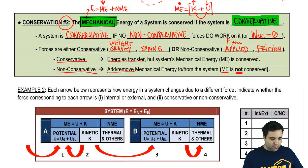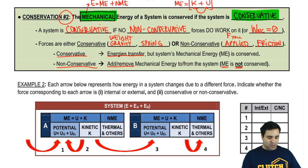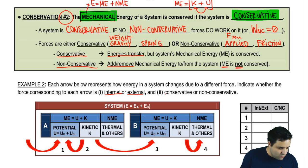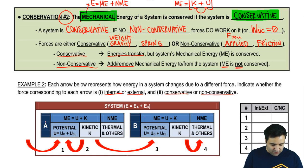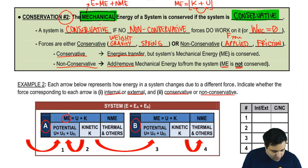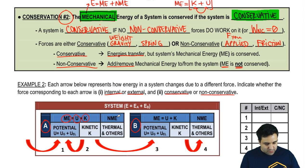The distinction between the two is subtle but important. I have an example here to help illustrate the difference between internal and external, and conservative and non-conservative. It says: each arrow below represents how energy in a system changes due to a different force — indicate whether the force is internal or external, or conservative or non-conservative. The bigger red box is the total system, made up of objects A and B. The total energy of the system is just a combination of A and B, showing all the different types of energy that each can have. Total energy is mechanical plus non-mechanical, and mechanical breaks down to potential and kinetic.